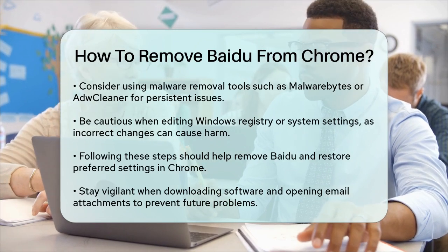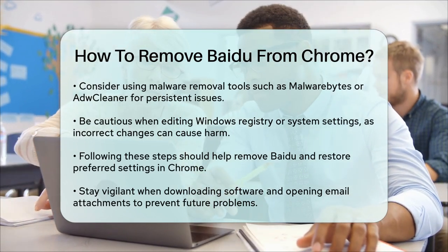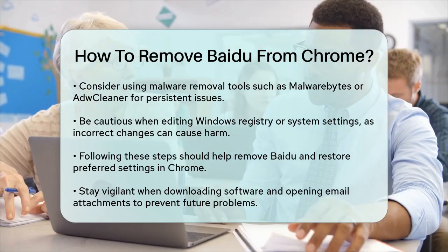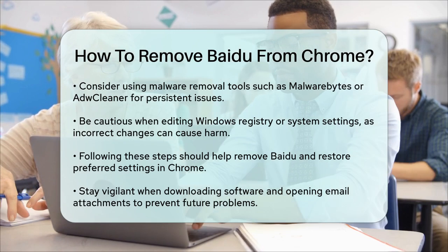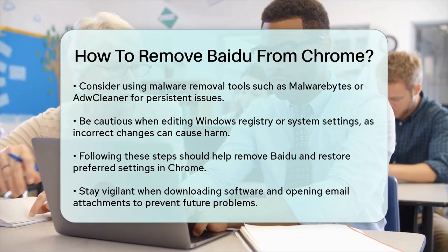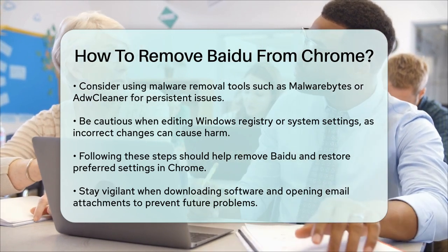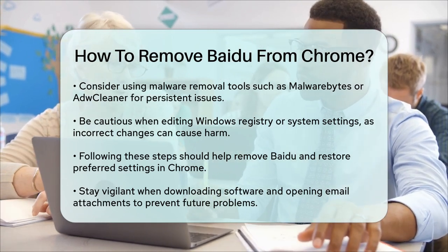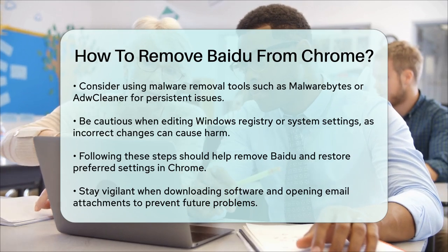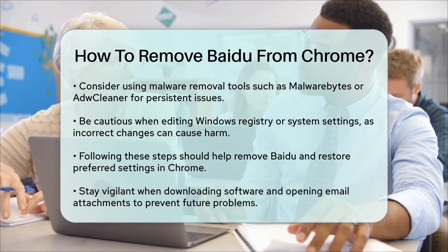In some cases, Baidu might have made changes to your browser settings through the Windows registry or other system settings. If you're comfortable doing so, you can try editing these settings manually, but be very careful as incorrect changes can harm your system. By following these steps, you should be able to remove Baidu from your Chrome browser and restore your preferred settings. Remember to always be cautious when downloading software and opening email attachments to avoid similar issues in the future.